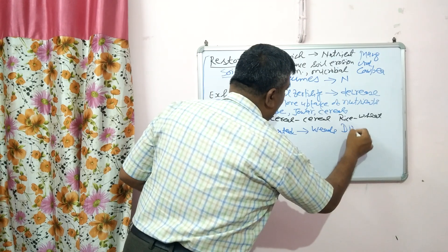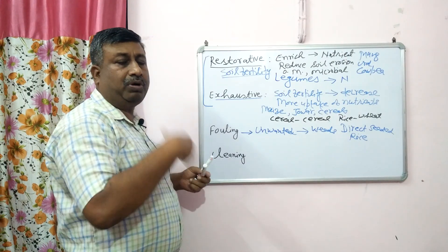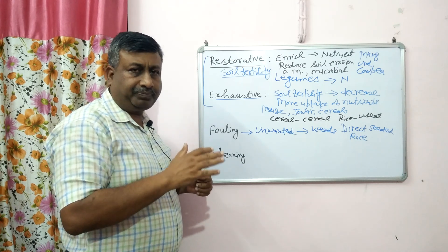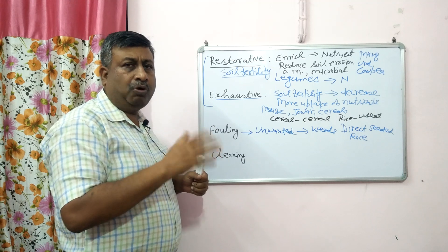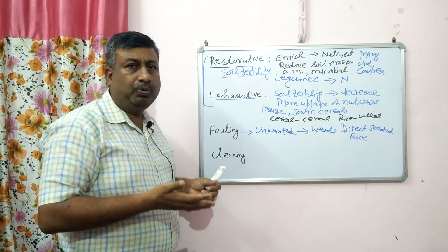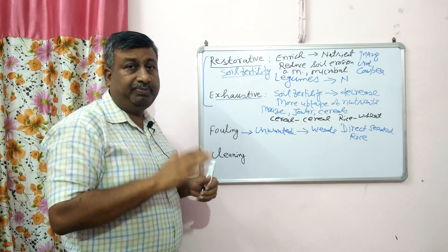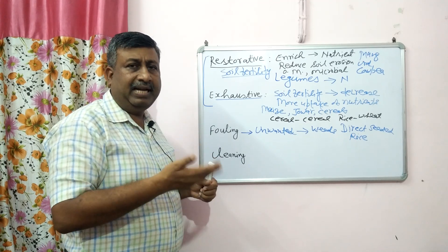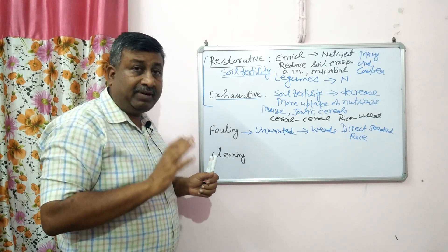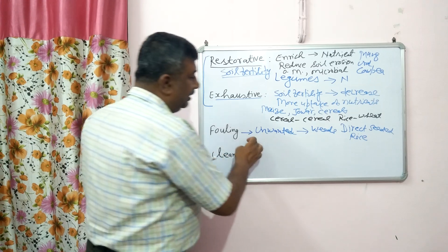For example, direct-seeded rice. In the case of direct-seeded rice, weed infestation is very high, so we have to use more herbicides to control the weeds. Cultivation practices are such that they allow weed infestation because there is no tillage — rice is directly sown, there is no puddling, no transplanting, no maintenance of water in the field. This condition creates a favorable situation for weed growth. Without herbicide use, direct-seeded rice will give very low yield. Such crops are called fallow crops, where a major unwanted problem — weeds — creates maximum yield loss.